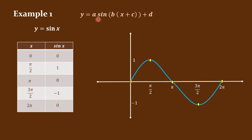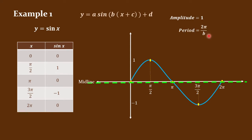Remember that A gives us the amplitude — the coefficient here gives us the amplitude, which is 1. The amplitude gives us the vertical distance of the maximum and minimum points of our graph from our midline. For the period, this can be computed using 2 pi over b. Since b is equal to 1, the period is 2 pi. Therefore, this repeating pattern will happen every 2 pi.